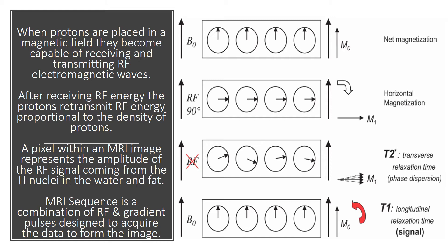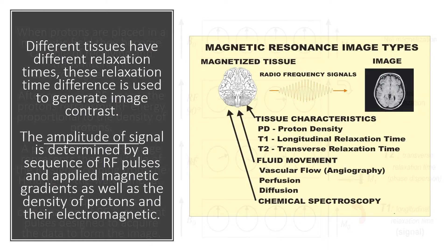An MRI sequence is an ordered combination of RF and gradient pulses designed to acquire the data to form the image. Different tissues have different relaxation times, and these relaxation time differences are used to generate image contrast. The amplitude of signal is determined by a sequence of radio frequency pulses and applied magnetic gradients.